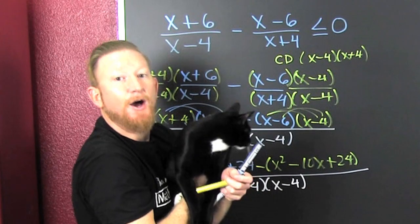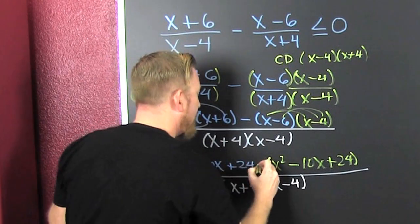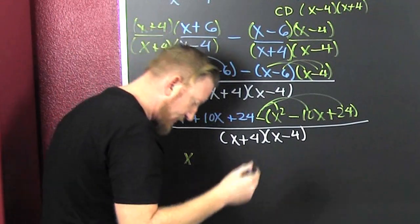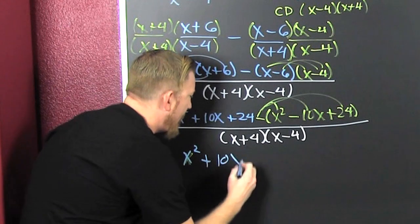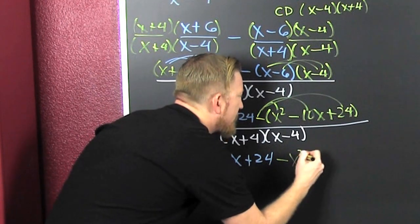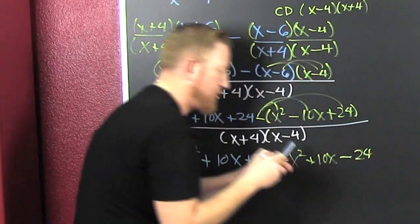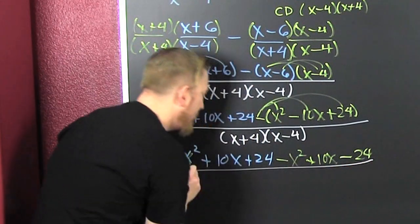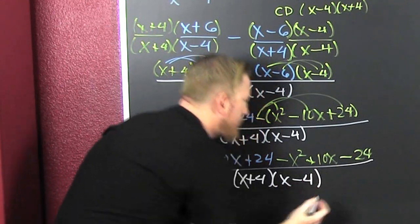I distribute that in, try not to get distracted. You have an x squared plus a 10x plus a 24, divided by that common denominator x plus 4 and x minus 4.